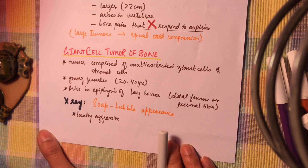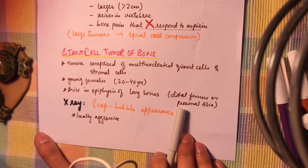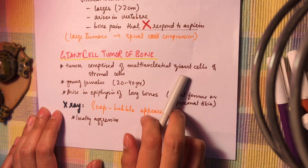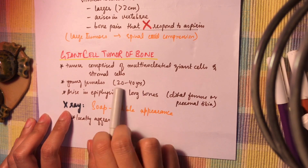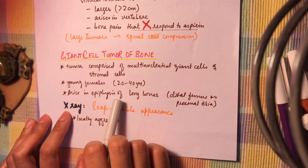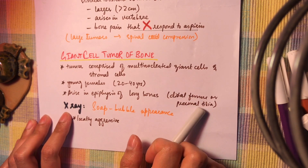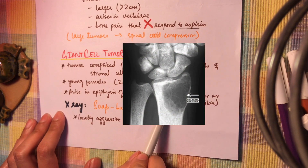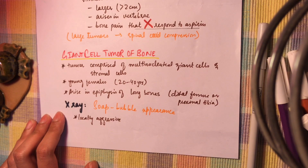Tumors of unknown origin include the giant cell tumor of bone. It is named because it is comprised of multinucleated giant cells and stromal cells. It occurs in young females aged 20 to 40 years and arises in the epiphyses of long bones such as the distal femur or proximal tibia, mainly the knee region. On X-ray it shows a soap bubble appearance, and these tumors are locally aggressive.